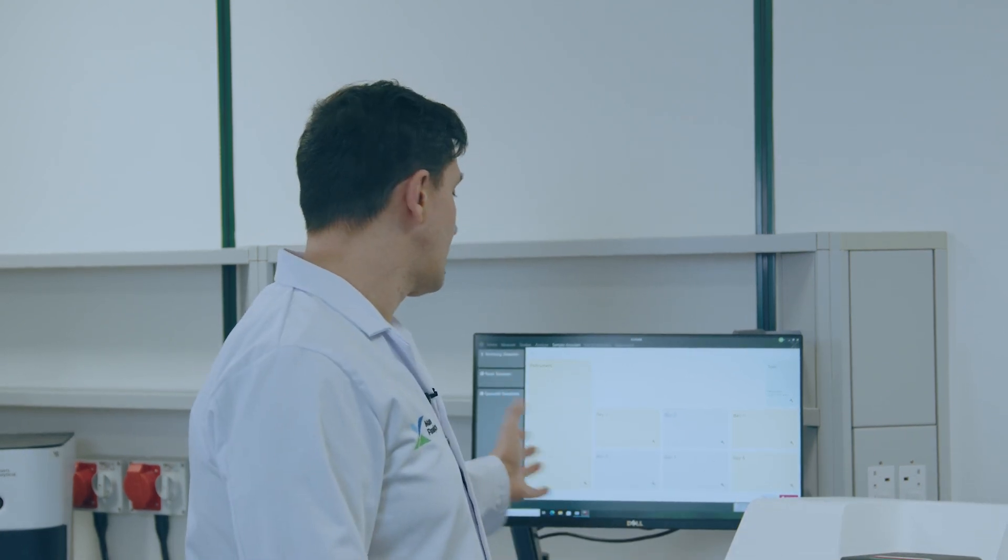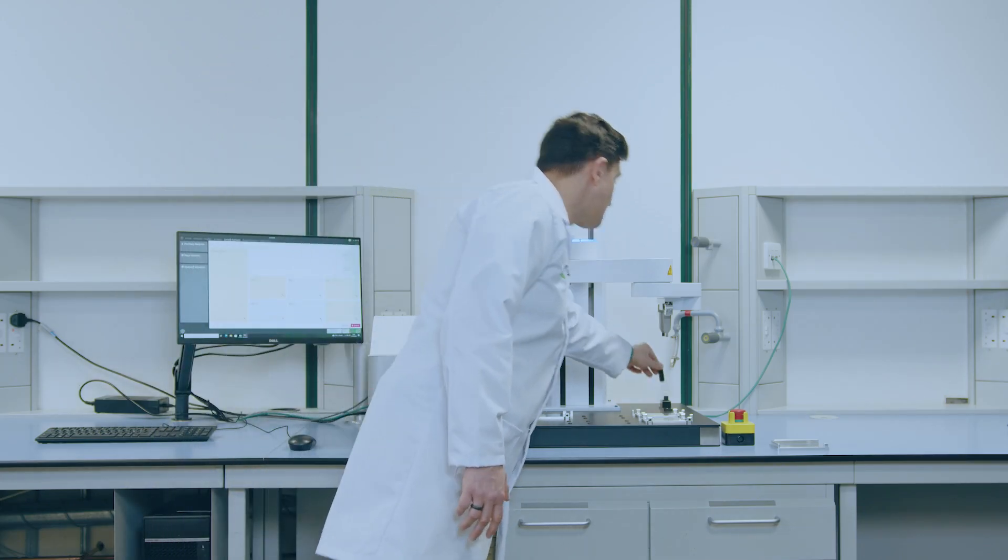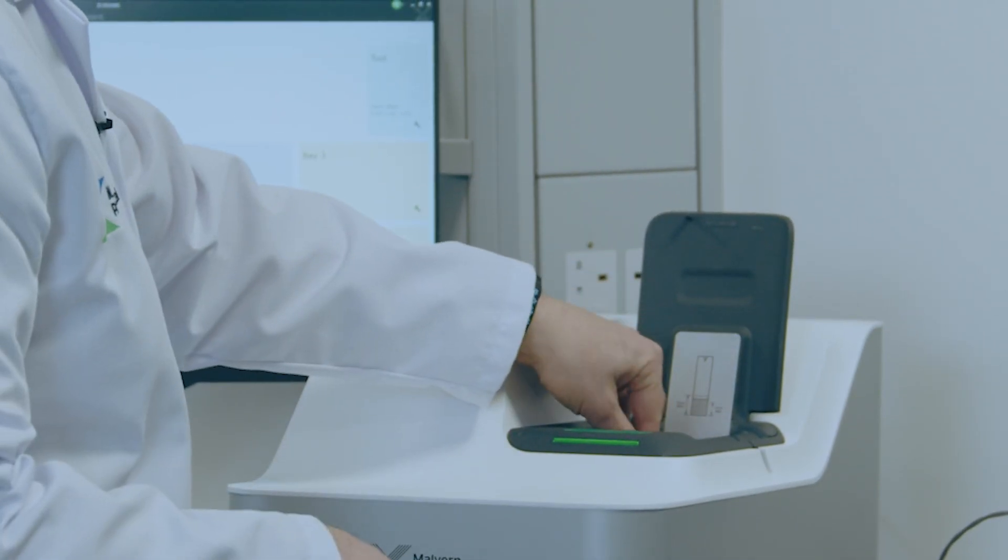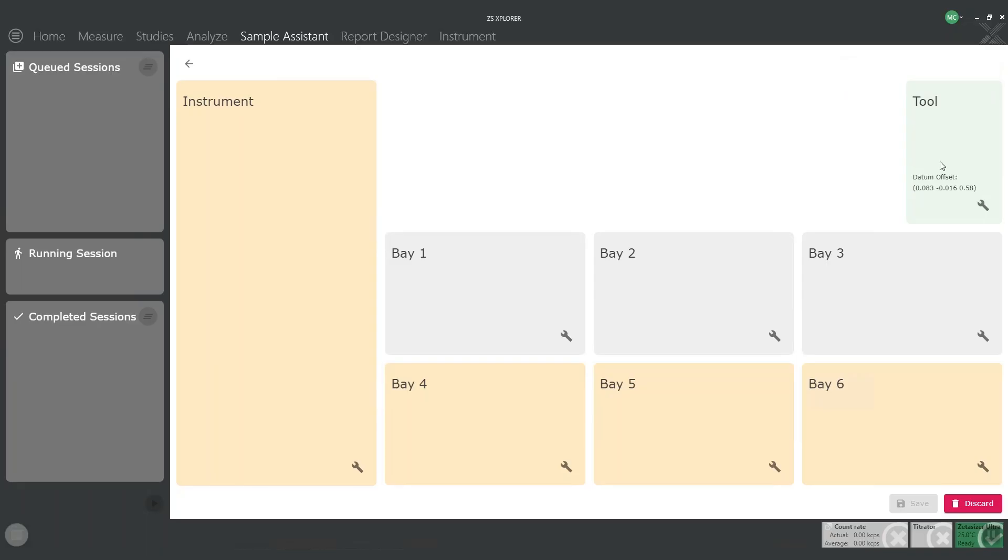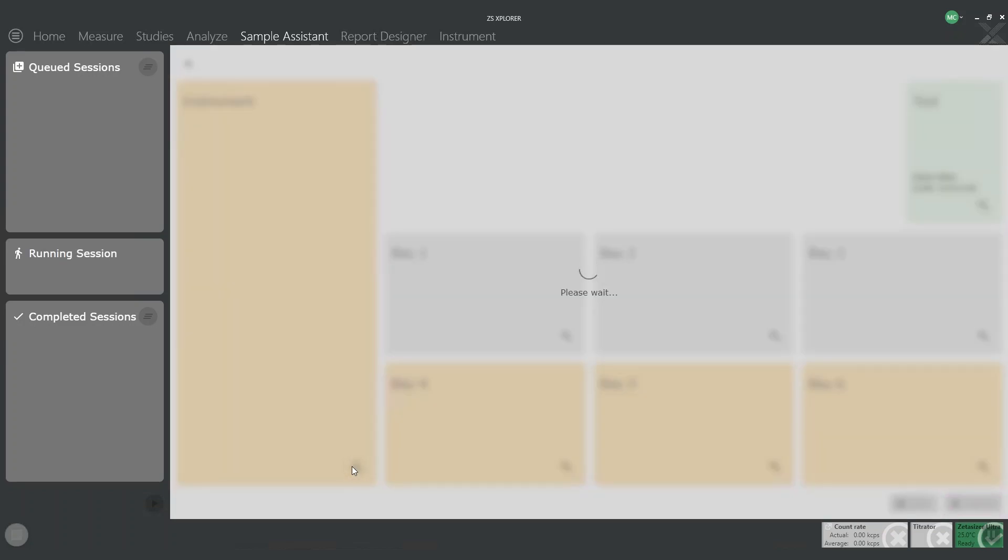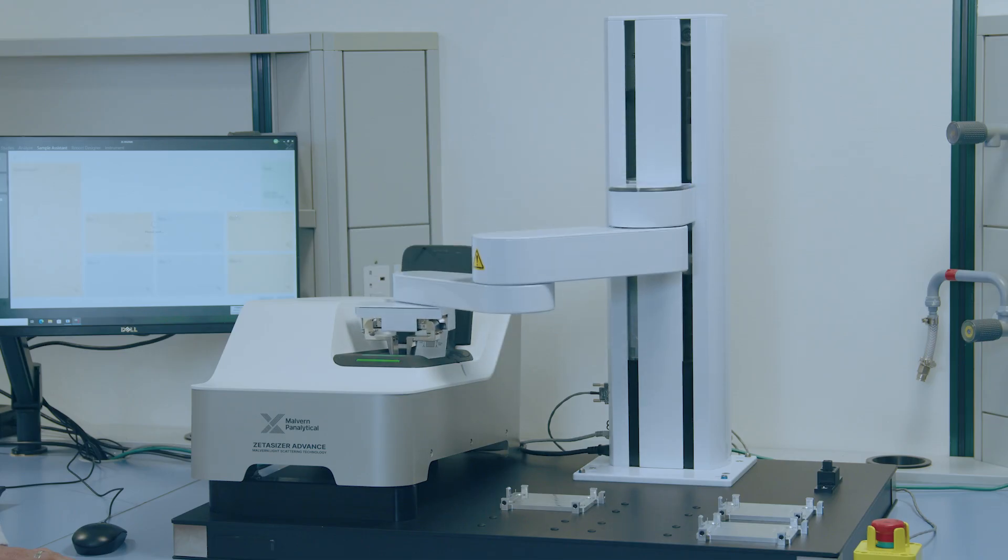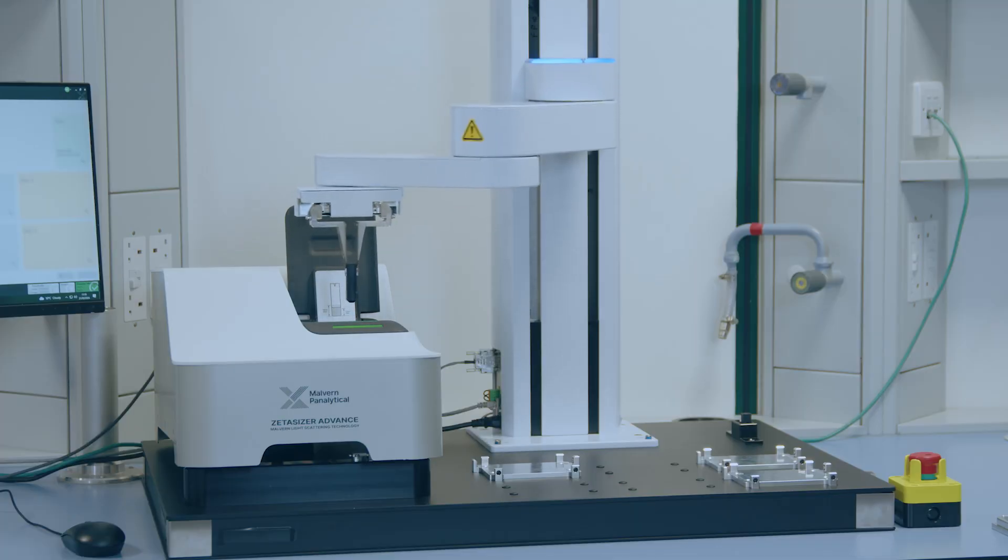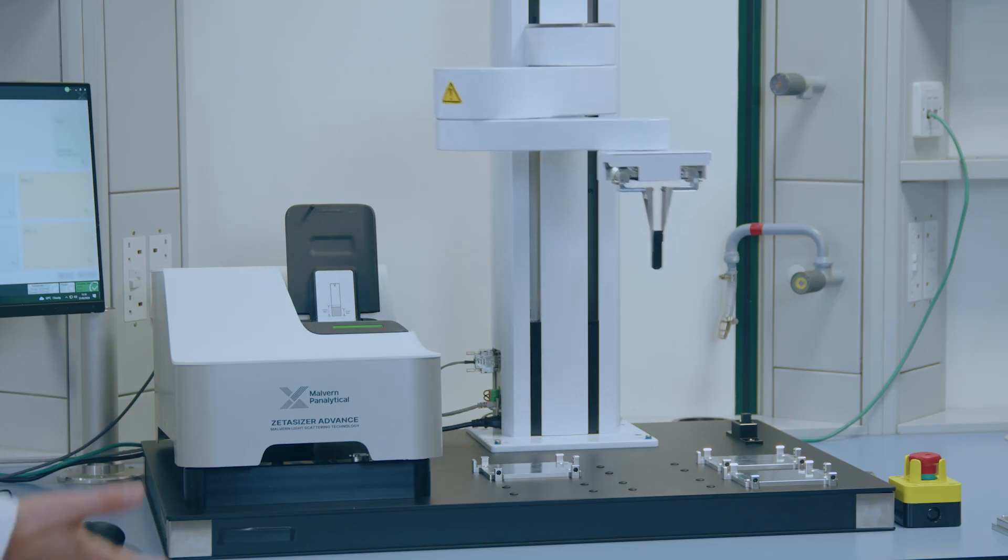Once we recorded the tool holder position, the next operation is to configure the position of the Zetacizer itself. For this operation, we need to take the datum tool and insert it in the Zetacizer. Once the tool has been inserted, you can just press the configuration button on the software and wait for the robot to record the position. Once the software is happy with the configuration, the arm will extract the datum tool and place it back in the tool holder.